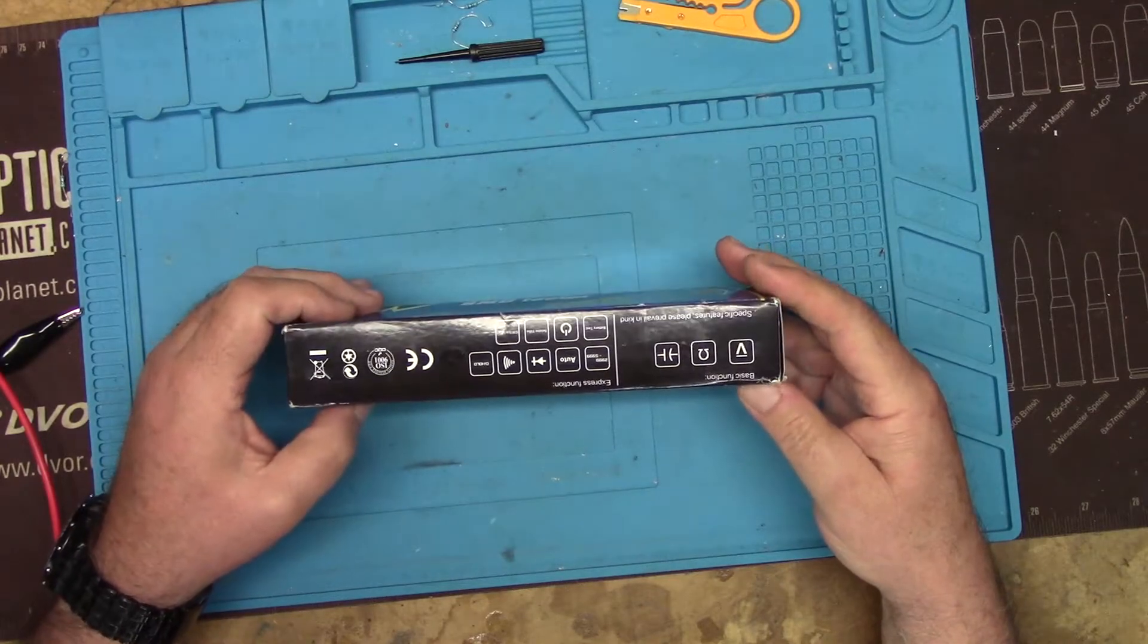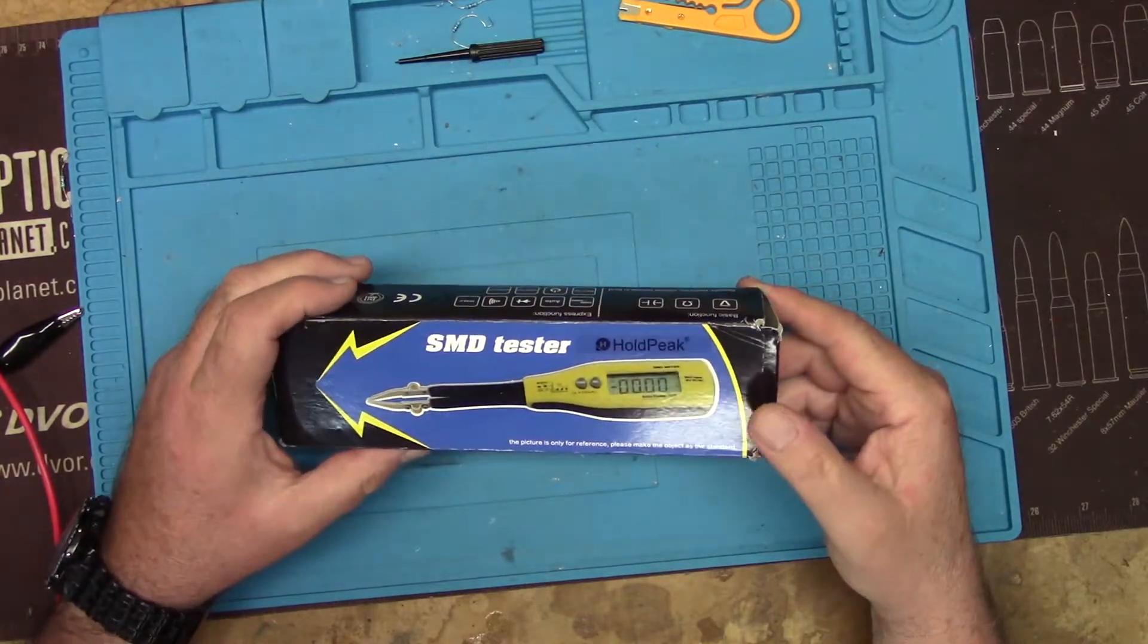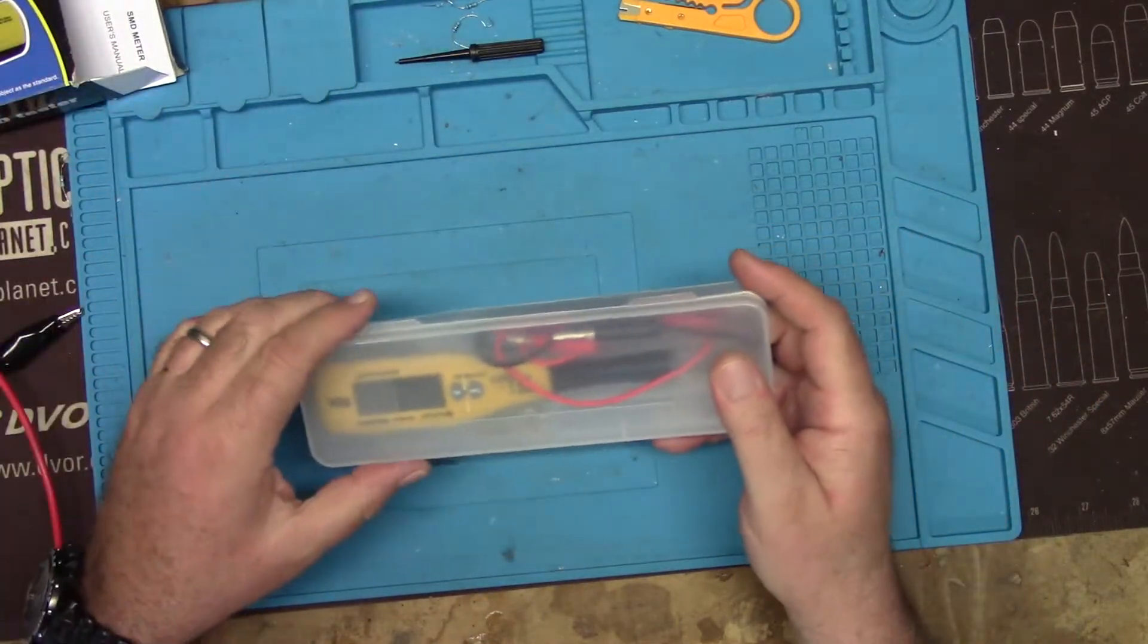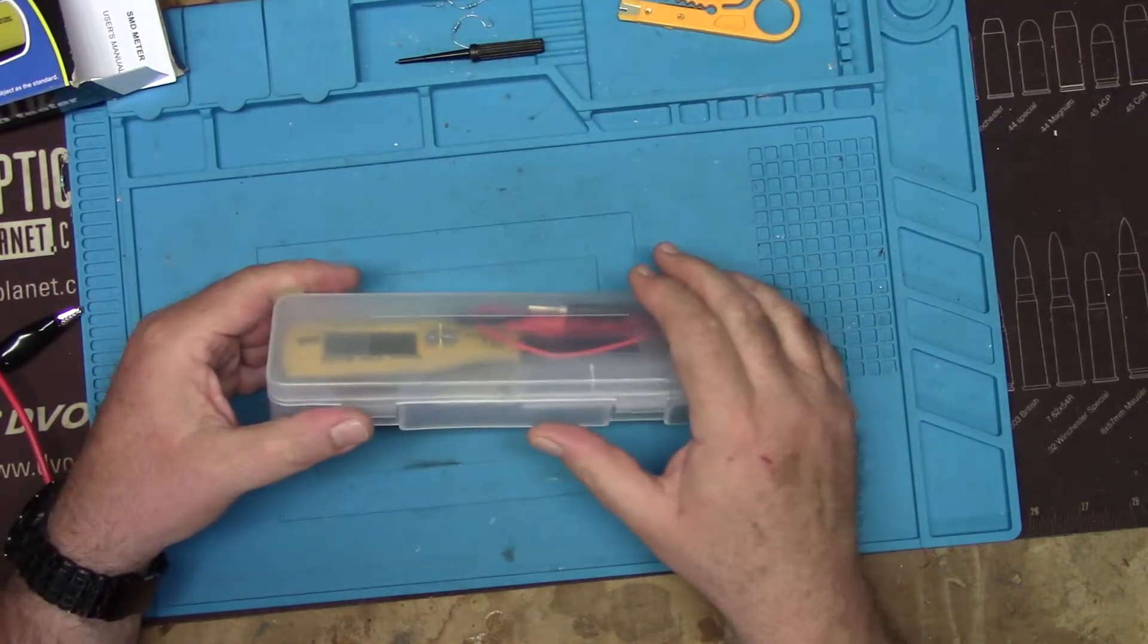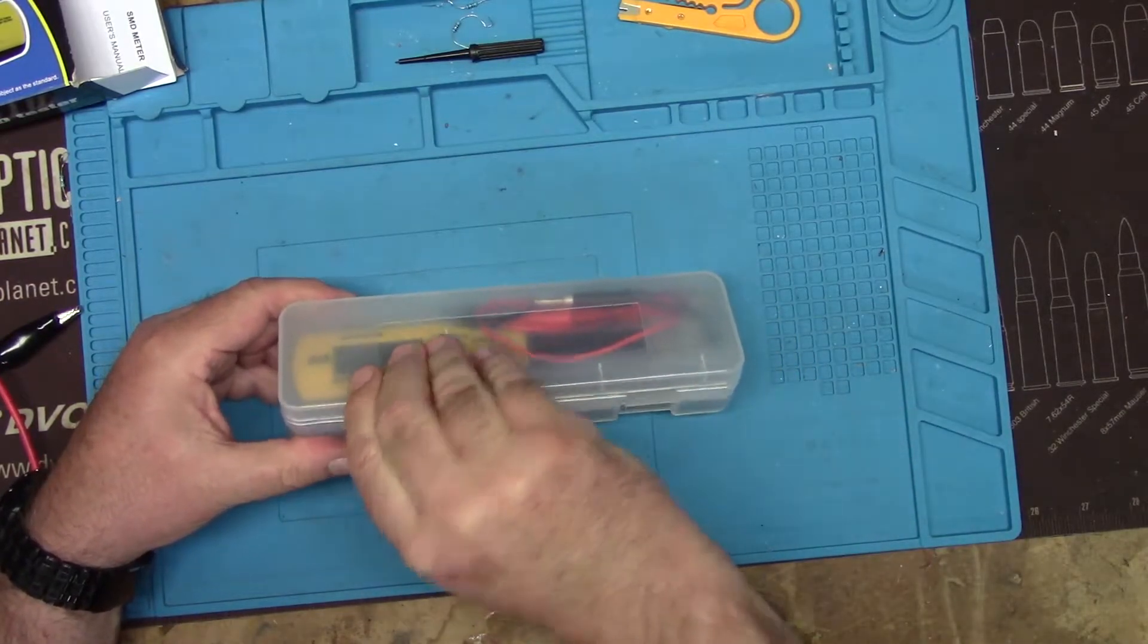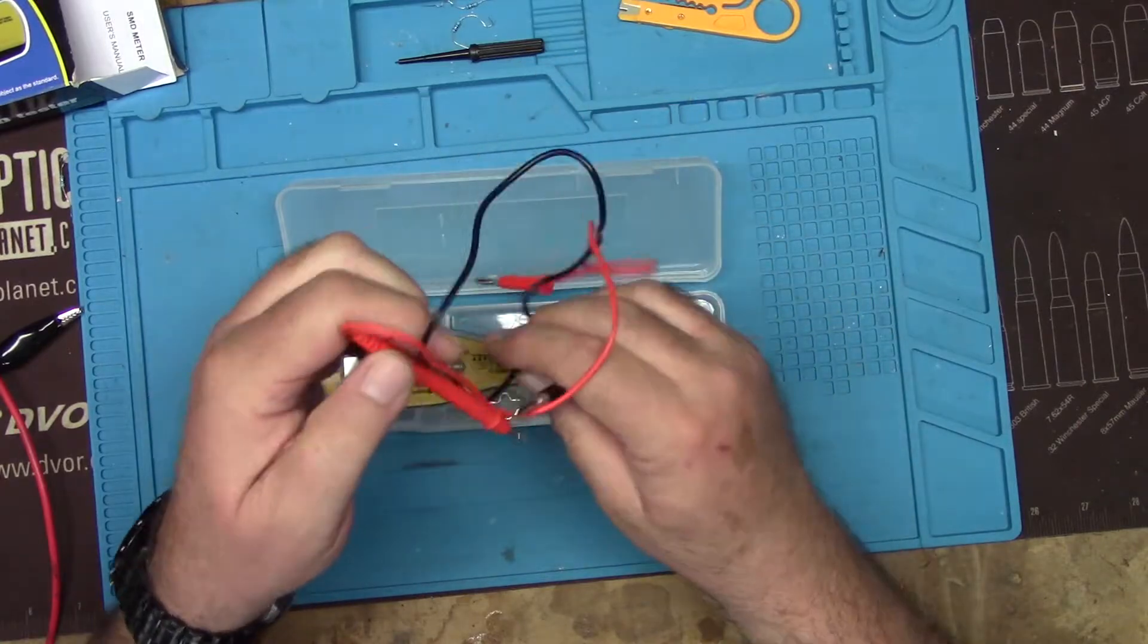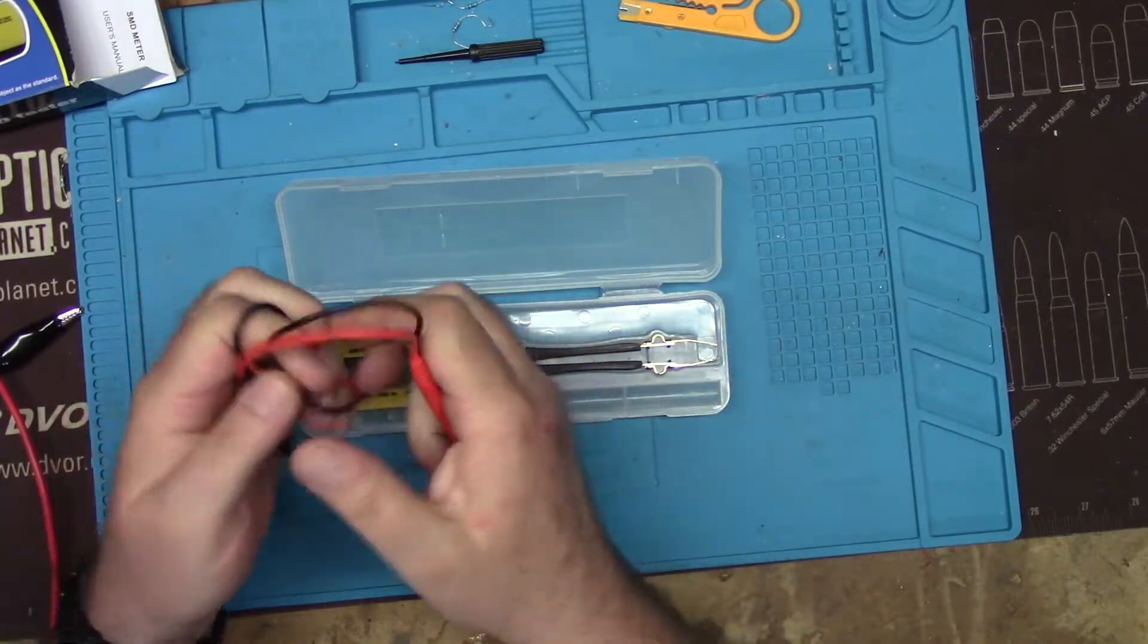It also has continuity and DC voltage. Although as this is made for surface mount devices, it is only DC voltage and it's only 36 volts. So you cannot plug this thing into wall power or you will let the magic smoke out. Comes in a nice little plastic case, and it comes with a set of leads. These are very flimsy leads.